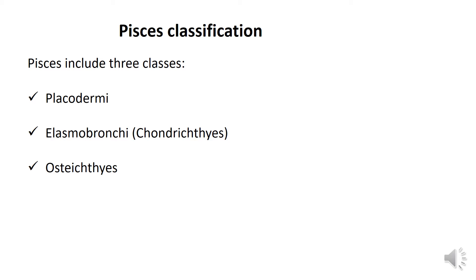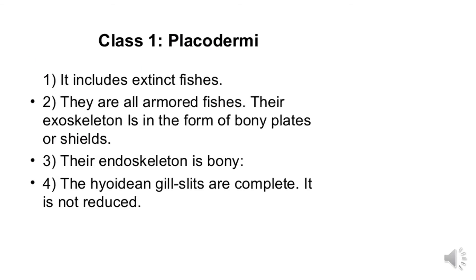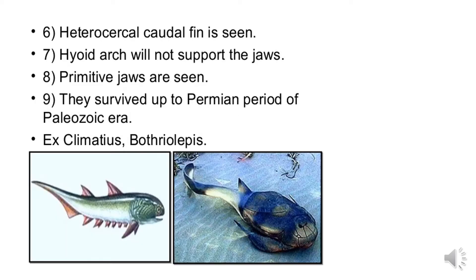Elasmobranchii is also called Chondrichthyes. The first class, Placodermi, mostly contains extinct fishes whose exoskeletons are covered with bony plates or shields. Their endoskeleton is bony, and the hyoidean gill slits are complete and not reduced. The heterocercal caudal fin has two unequal lobes. Jaws are not supported by the hyoid arch — primitive jaws are seen in these species. They survived up to the Permian period of the Paleozoic era. Examples are Climatius and Bothriolepis.